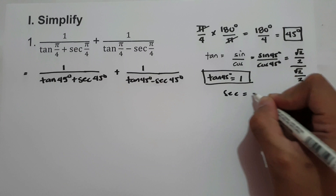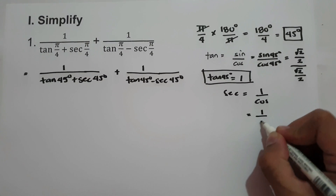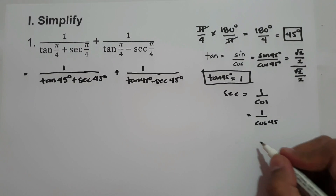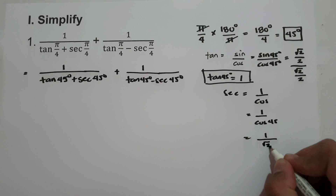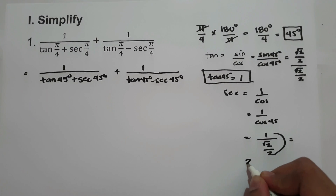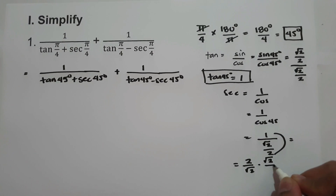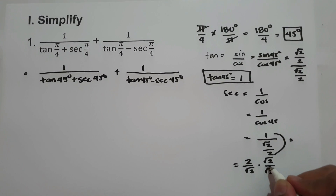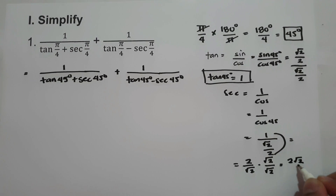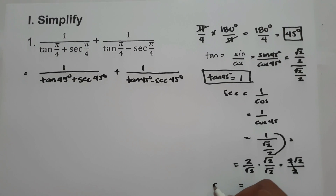We know that secant equals 1 over cosine. So secant(45°) equals 1 over cosine(45°), and cosine(45°) is √2/2. Simplifying, we get 2 over √2. We rationalize by multiplying numerator and denominator by √2: 2√2 over √4, and √4 is 2. So secant(45°) equals √2.